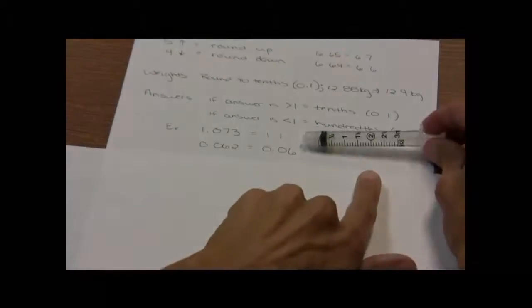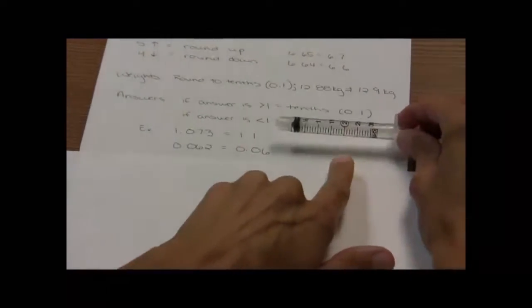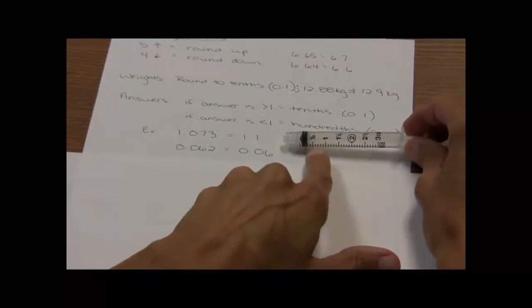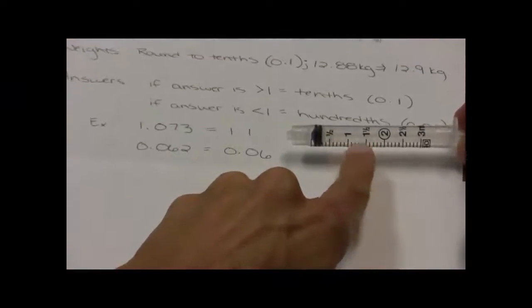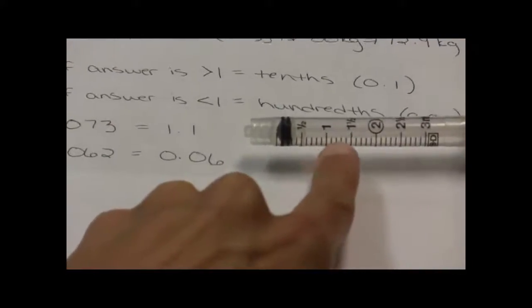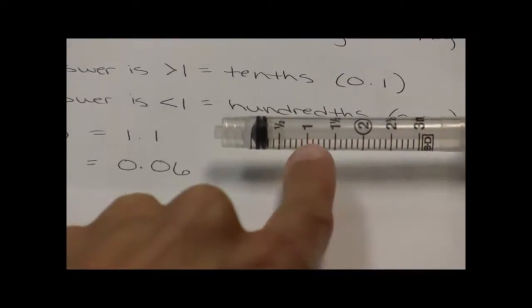The reason for that — if you have a hard time remembering — is because if my number is greater than 1, I'm going to use a syringe that's greater than a 1 cc syringe, such as this 3 mL syringe. On the 3 mL syringe, the long lines are worth 0.5 or half a milliliter, and each small line is worth a tenth of a milliliter.